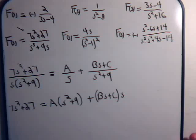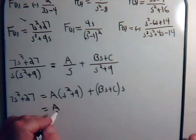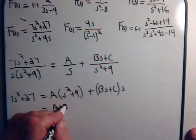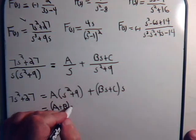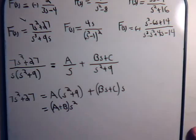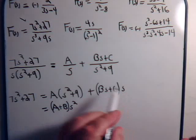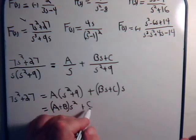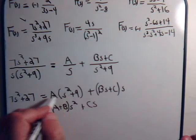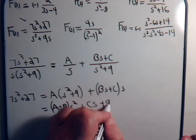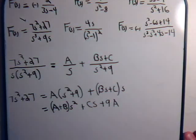So here then if we collect like terms, we have A plus B times s squared. And then we have plus C times s and plus 9A. And that has to equal 7s squared plus 27.